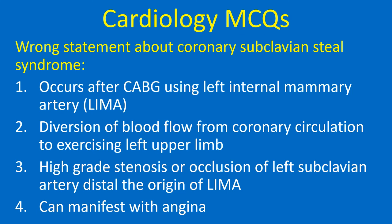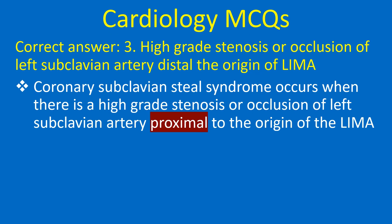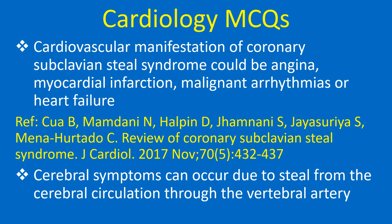Wrong statement about coronary subclavian steal syndrome: 1. Occurs after CABG using left internal mammary artery (LIMA), 2. Diversion of blood flow from coronary circulation to exercising left upper limb, 3. High-grade stenosis or occlusion of left subclavian artery distal to the origin of LIMA, 4. Can manifest with angina. Correct answer: 3 — this is wrong. The cardiovascular manifestation occurs when there is high-grade stenosis or occlusion of left subclavian artery proximal to the origin of LIMA. Manifestations could include angina, myocardial infarction, malignant arrhythmias, or heart failure. Cerebral symptoms can also occur due to steal from the cerebral circulation through the vertebral artery.